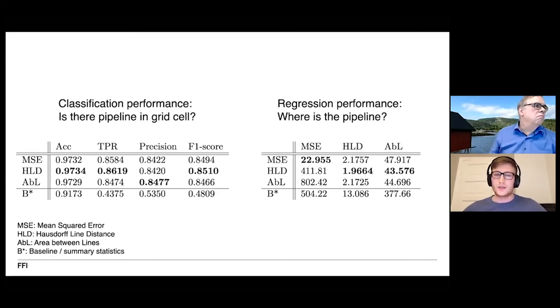We create a relatively simple baseline which only predicts the highest likelihood of containing pipeline within regions of the input or not according to the global statistics of the dataset. As we can see the baseline gets a relatively high accuracy of almost 92 percent which also shows that we have a fairly unevenly distributed dataset. But we also see that the deep learning models trained with these different regression functions get a much higher F1 score. And we also see that they outperformed the baseline in the regression refinement task here evaluated in the Hausdorff line distance and the area between lines functions. Additionally, we can see that the Hausdorff line distance and the area between lines are achieving a much higher mean squared error evaluation which also shows that the mean squared error isn't necessarily a good metric for evaluating regression refinement.